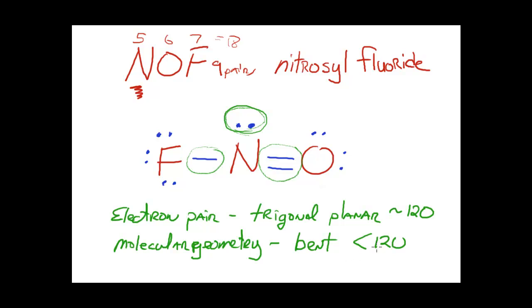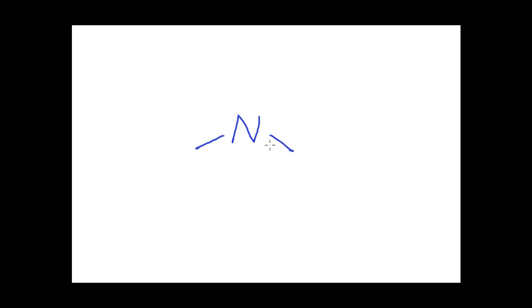To illustrate this a little bit more, I'm going to redraw this structure. Here's my structure. I have my three regions of density. Here's one, here's one, and here's one. Now, I know that this angle here is the one I'm talking about that's less than 120. Actually, in nitrosyl fluoride, it's around 110 degrees.